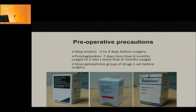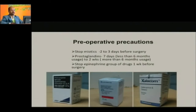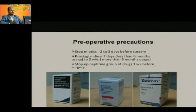Pre-operative precautions — something we have always been concerned about is the medication the patient is already on. It's usually recommended to stop miotics two to three days before surgery, mainly because miotics also have a tendency to pull the lens-iris diaphragm forward, causing shallowing of the chamber. Prostaglandins have a lot of hyperemia, so it's better to stop them about one week to ten days before surgery.